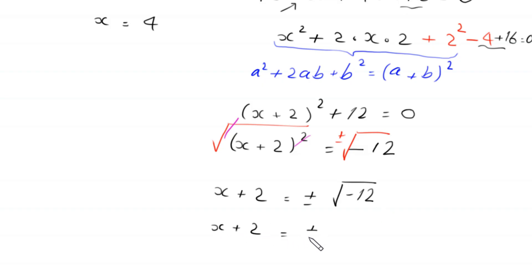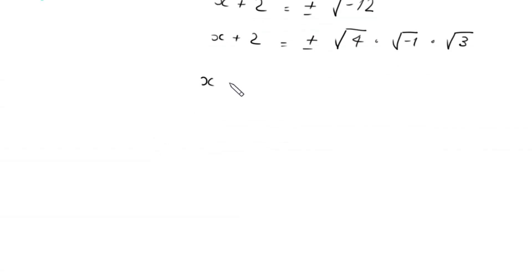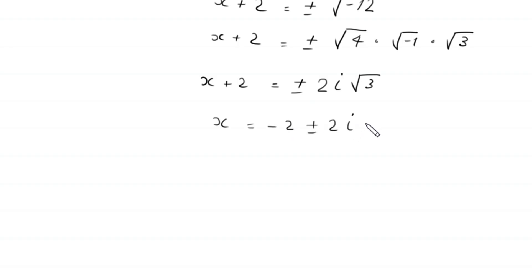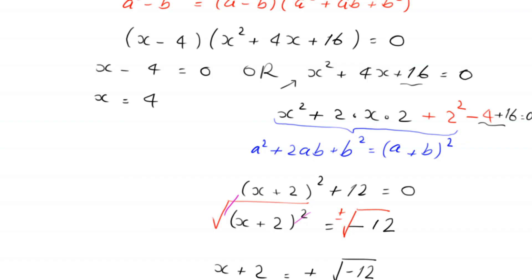We write root negative 12 as root 4 times root negative 1 times root 3. Root 4 becomes 2 and root negative 1 becomes i, so x plus 2 equals plus or minus 2i√3. Moving the 2 to the right-hand side, x equals negative 2 plus or minus 2i√3. These are the fifth and sixth values. So in total we have six solutions: x₁ = −4, x₂ = 2 + 2i√3, x₃ = 2 − 2i√3, x₄ = 4, x₅ = −2 + 2i√3, and x₆ = −2 − 2i√3.